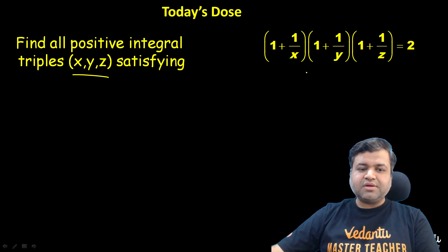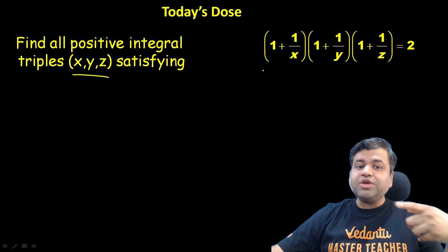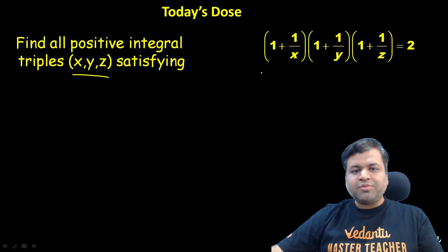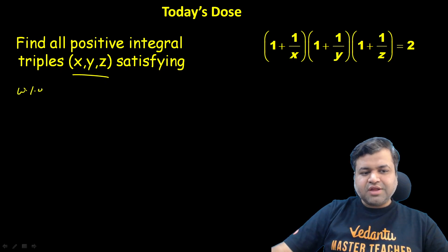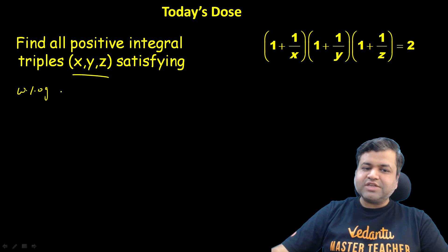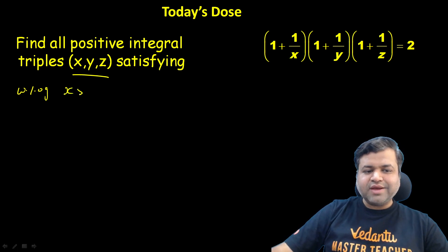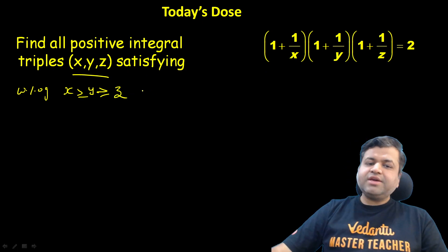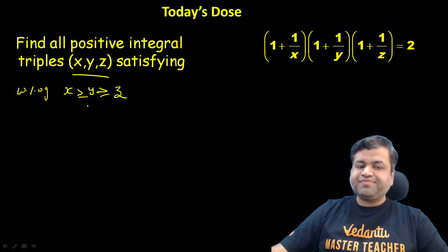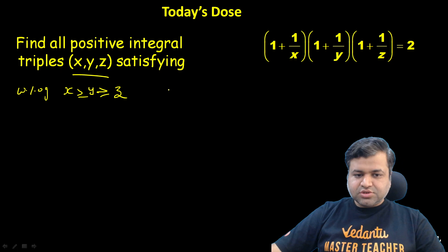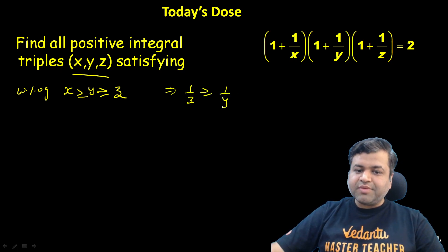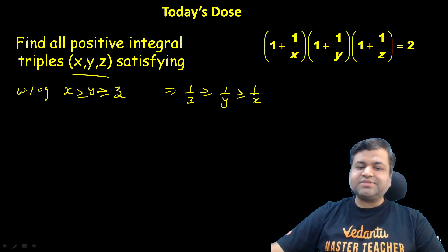This equation is symmetrical in x, y, z — if there is any solution, then all permutations also work. So without loss of generality, since everything is symmetrical in x, y, z terms, we can assume x ≥ y ≥ z. Whatever solution comes, we will consider their permutations. This implies that 1/z ≥ 1/y ≥ 1/x.